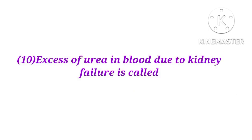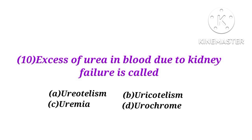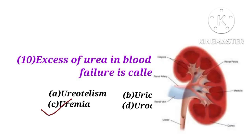Number 10. Excess of urea in blood due to kidney failure is called ureotelism, uricotelism, uremia, or urochrome? The answer is C. Excess of urea in blood due to kidney failure is called uremia.